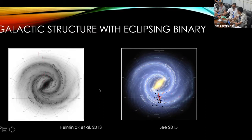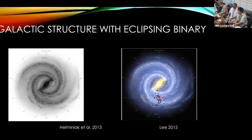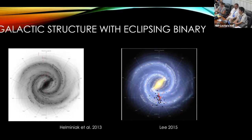I also did some follow-up with the Catalina Sky Survey, but it's far worse because it's not as deep as OGLE and doesn't have good infrared. PVP will provide much better data, and with good light curves we can do a much better job mapping the entire galactic structure. I'll stop there and take questions.